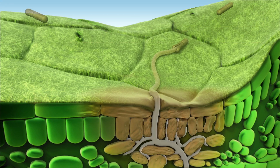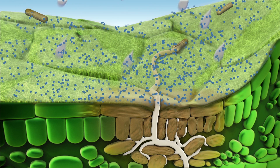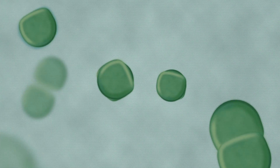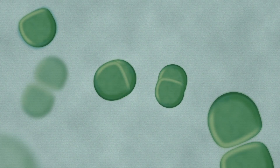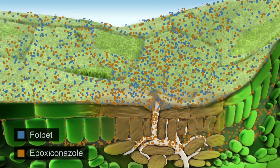Folpet is a multi-site protectant with no known resistance. Acting on three different cellular levels, Folpet disrupts cell production, inhibits the division of the germ tube and interferes with the energy production of the fungus.